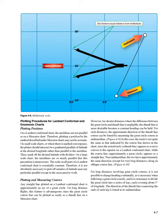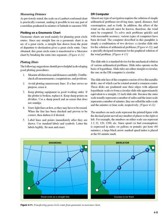Figure 4-10. For long distances involving great circle courses, it is not possible to change heading continually, and it is customary to divide the great circle into a series of legs, each covering about 5 degrees of longitude. The direction of the rhumb line connecting the ends of each leg is found at its mid-meridian. The scale on a Lambert conformal chart is practically constant, making it possible to use any part of a meridian graduated in minutes of latitude to measure nautical miles.